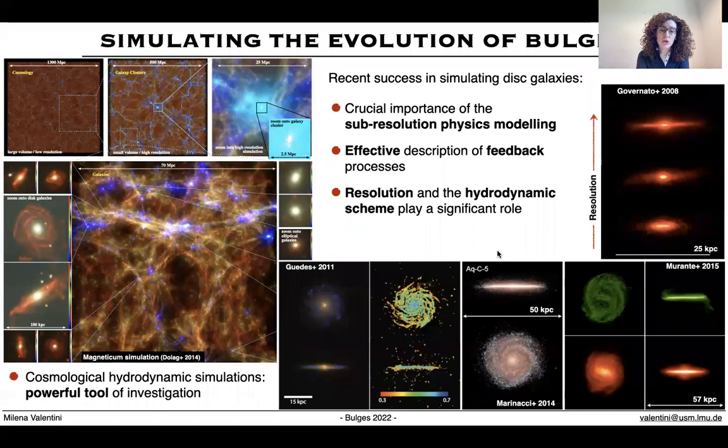Cosmological hydrodynamical simulations are key theoretical tools to investigate the way in which galaxy bulges assemble their mass across cosmic time. These simulations allow us to study the formation and evolution of galaxies hosting bulges and provide a valuable framework to interpret observations. In particular, cosmological simulations of spiral galaxies represent a powerful testbed to gain insight on the formation of galaxy bulges.